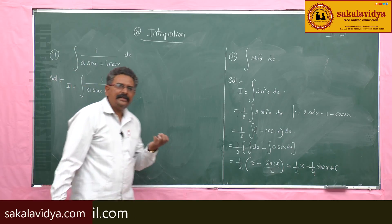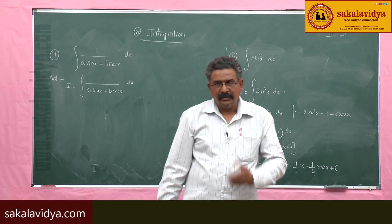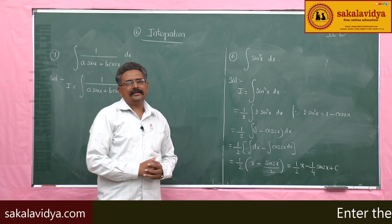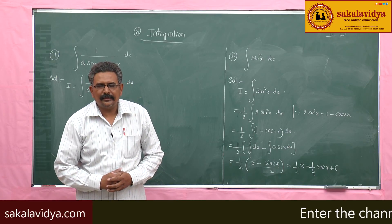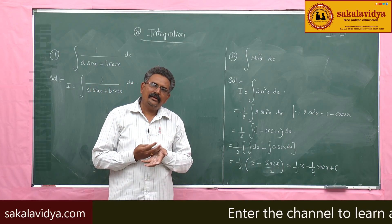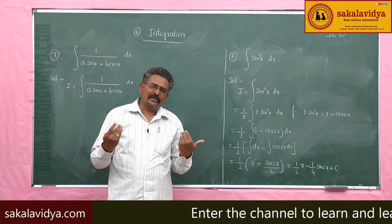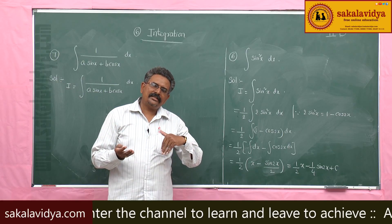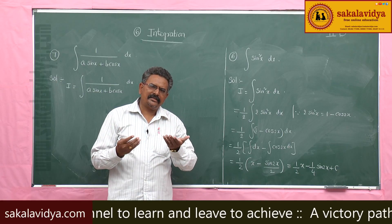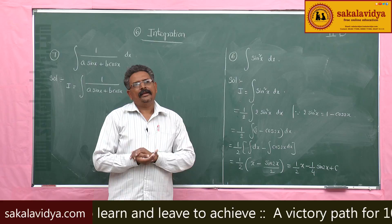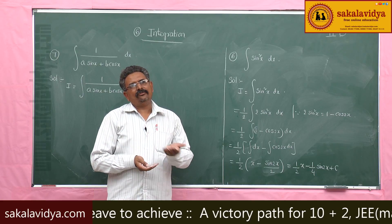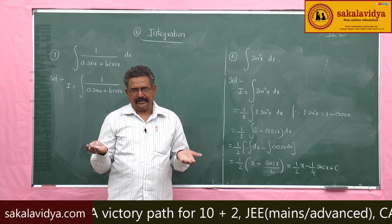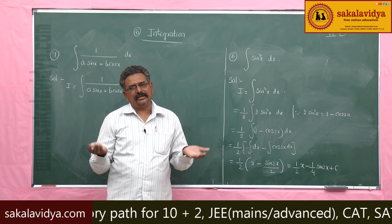A sin x + B cos x is there. Let us write A sin x + B cos x in terms of a single sin or cos function. If we get 1 by cos, we get secant x and can easily integrate it. If we get 1 by sin, we get cosecant x and can easily integrate it. Let us try.